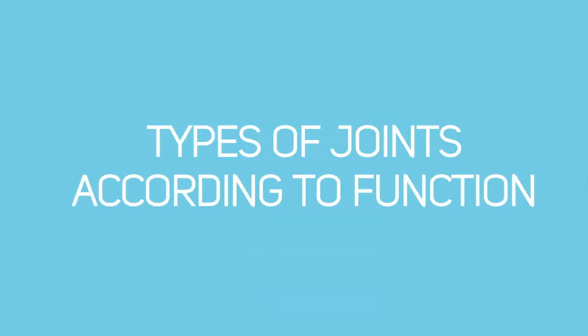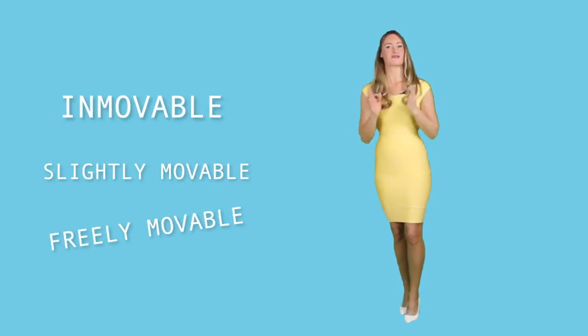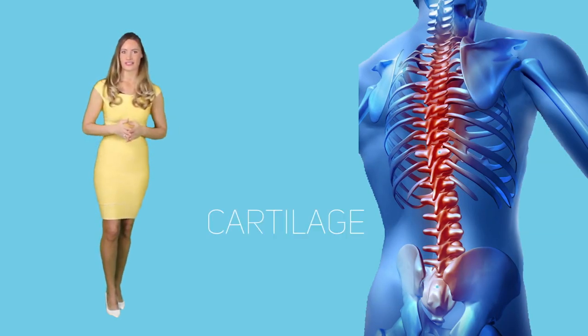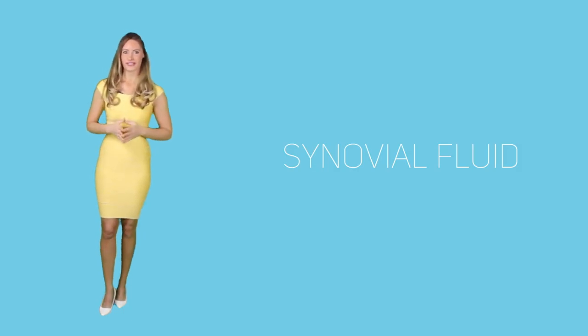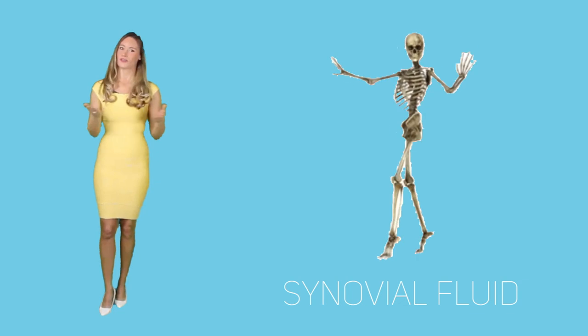Types of joints according to function. Structural joints can be immovable, slightly movable, and lastly, freely movable. Immovable joints, like the skull, are connected by fibrous tissues. Slightly movable joints, like the ones found in the spinal column, are held together by cartilage, which are softer than fibrous tissues. The last one, the freely movable, are connected by the synovial fluid. An example of a freely movable joint is the shoulder joint or the knee joint.